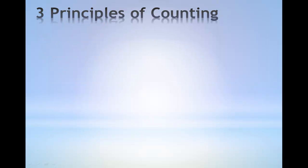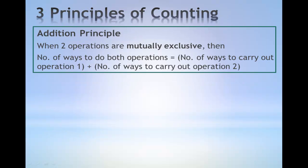Three principles of counting. The first principle of counting is the addition principle, which says that when two operations are mutually exclusive, then the number of ways to do both operations is given by the number of ways to carry out the first operation plus the number of ways to carry out the second operation.